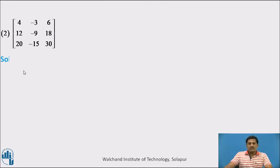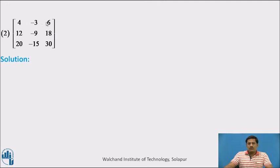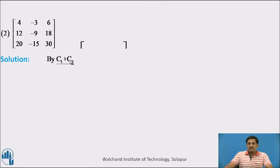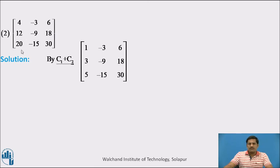Let us consider one more example. Here we want to reduce this 4 to 1. We check for 1 in column number 1 — there are no ones. But minus 3 is useful: when I add column 1 to column 2, the first entry becomes 1. Performing the transformation C1 plus C2: there is no change in the last two columns, and column 1 becomes 4 minus 3 is 1, 12 minus 9 is 3, and 20 minus 15 is 5.